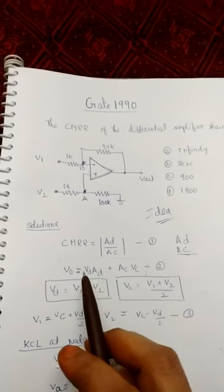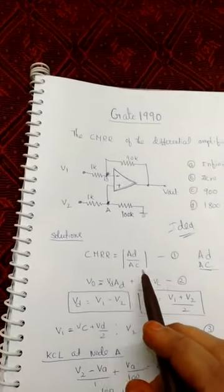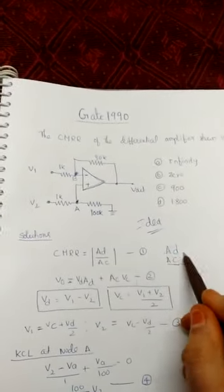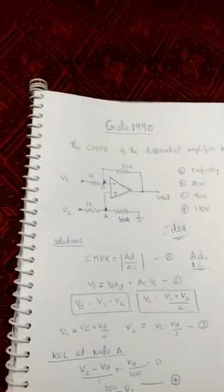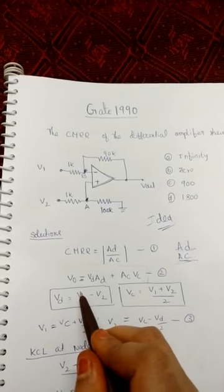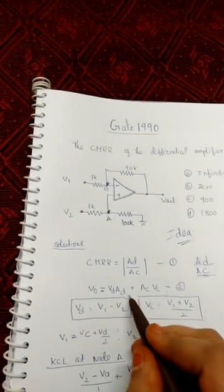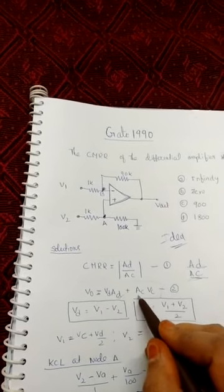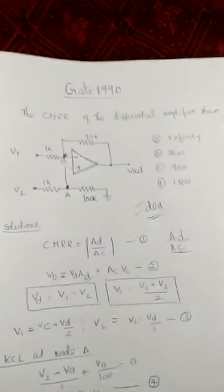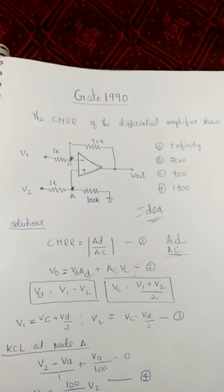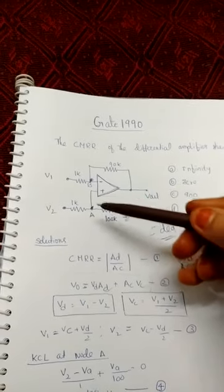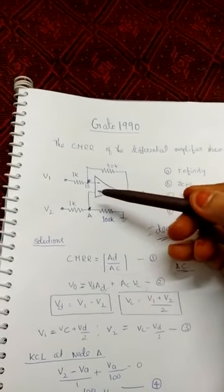Let's see the solution. The common mode rejection ratio has a formula: it is the ratio of differential gain AD to common mode gain AC. The general equation for the output voltage of the differential operational amplifier depends on both differential voltage and common mode voltage, with corresponding gains. The important definition of an operational amplifier is that it amplifies the difference between the two signals and nullifies the common signals at the input side.